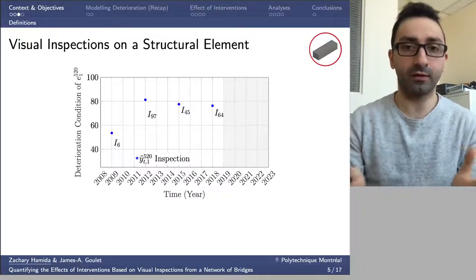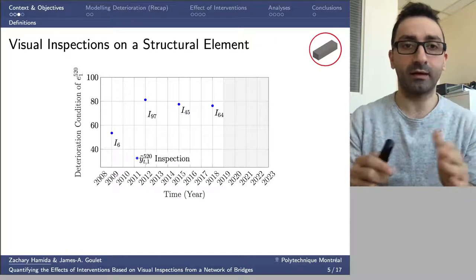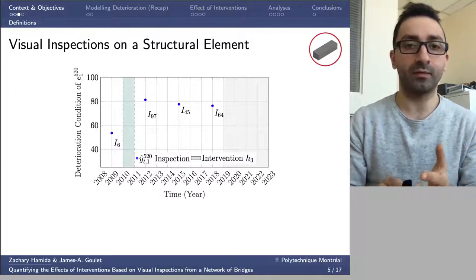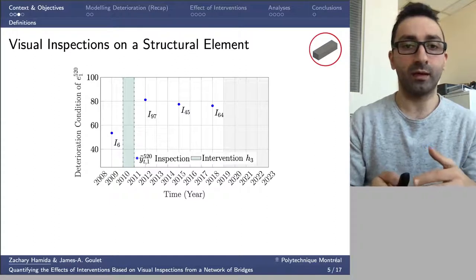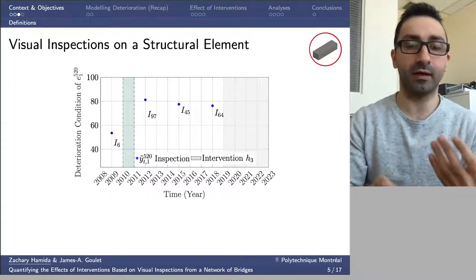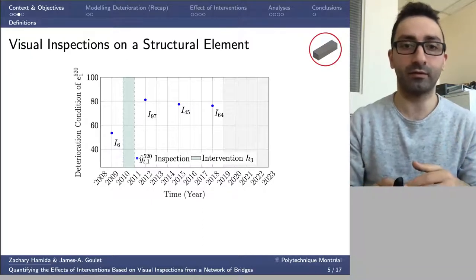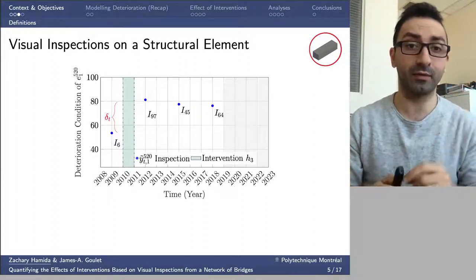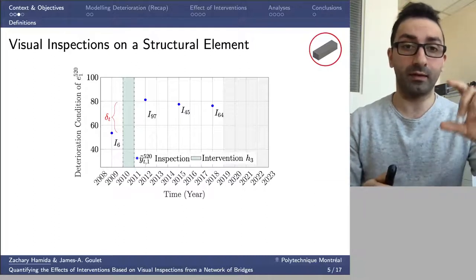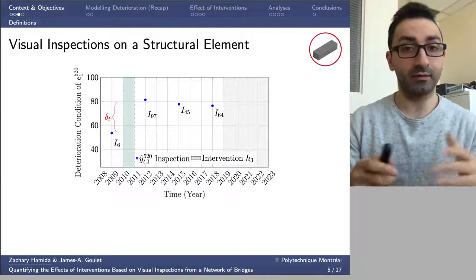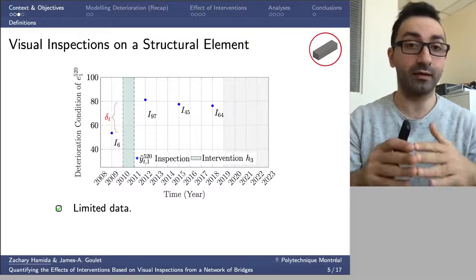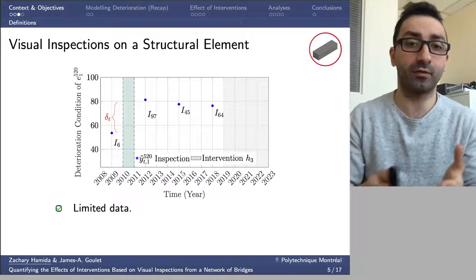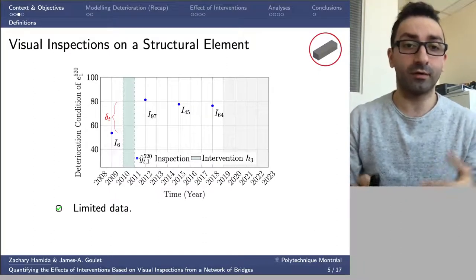Our focus is mainly on quantifying and modeling the effect of interventions. This case has an intervention performed in the year 2011, represented by the bluish shaded area on the graph. Our main interest is to quantify the jump in condition, represented by the delta quantity. One characteristic of this database and visual inspections in general is that the data is limited — only three or four inspection points over time — and the data is subjective, with high variability due to different inspectors.